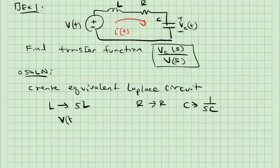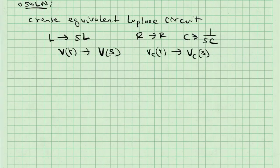V of T becomes V of S, and Vc of T becomes Vc of S. In addition, I of S replaces I of T. I can redraw my circuit so that way I'm clear on what has happened.